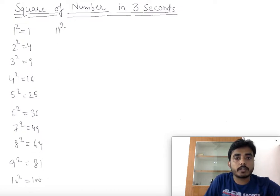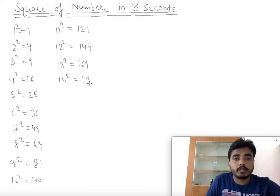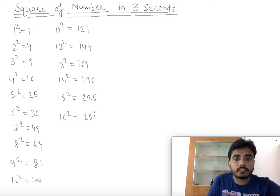11 squared is 121, 12 squared is 144, 13 squared is 169, 14 squared is 196, 15 squared is 225, 16 squared is 256.